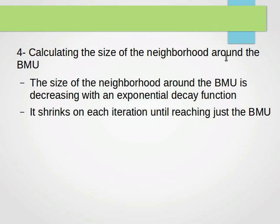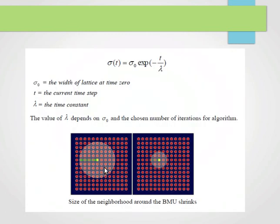After that, we calculate the size of the neighborhood around the best matching unit. The size of the neighborhood around the BMU is decreasing with an exponential decay function, and it shrinks on each iteration until reaching just the BMU. That neighborhood size keeps decreasing with time until we just reach the BMU. That means the size of the neighborhood becomes zero. If you try to visualize it, this is our grid. The size of the neighborhood for the BMU is that big at one point of time, and then at some other iteration it may be that big. So it keeps decreasing.